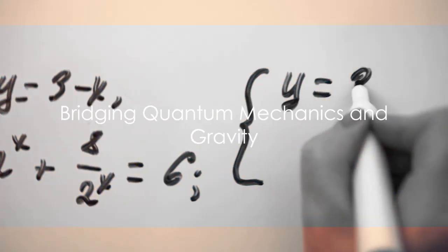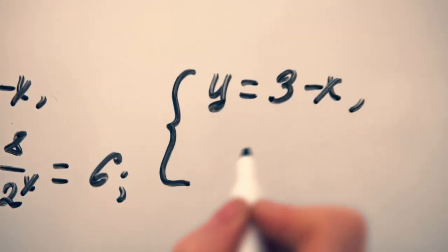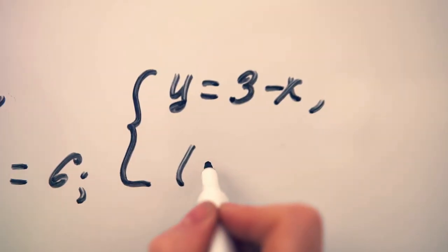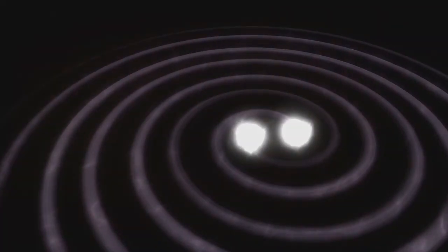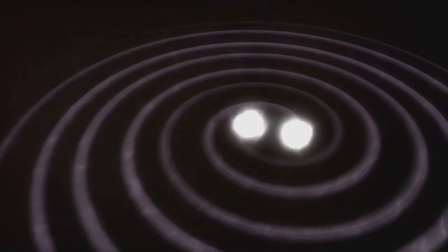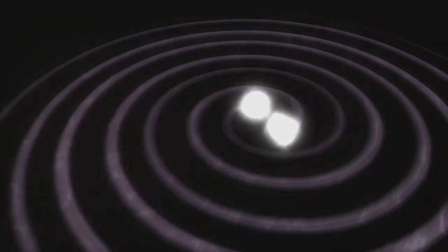But why does this formula matter? What makes it so special? The answer lies in the revolutionary ideas it brings to the table. The Bekenstein-Hawking formula connects the realms of quantum mechanics and gravity, two fields that traditionally don't play well together.